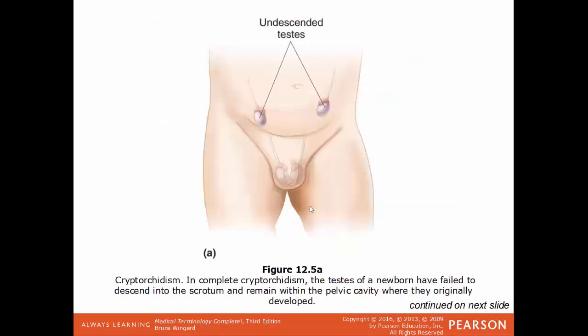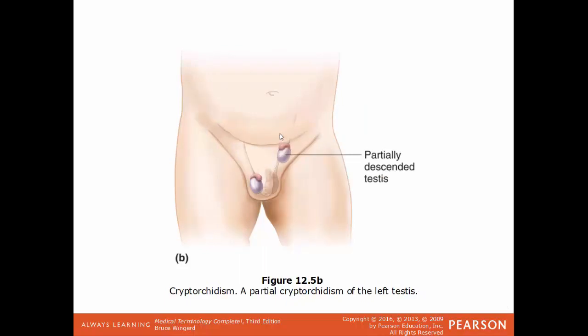In this illustration, we have an example of cryptorchidism, where normally the testes would fully descend outside of the body by the time the baby is born. But in this condition, the testes remain in the abdomen or in the pelvic cavity — they are not fully descended. In this example, we have a partial cryptorchidism, where one testis descends properly but the other does not. For this boy, the right testis is fine, but the left testis has not descended yet.